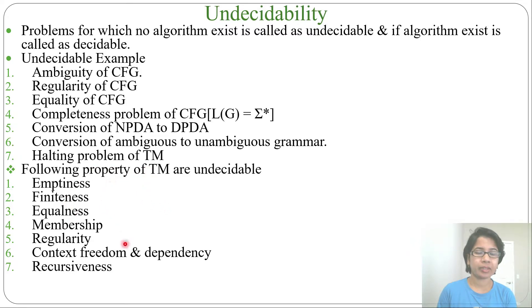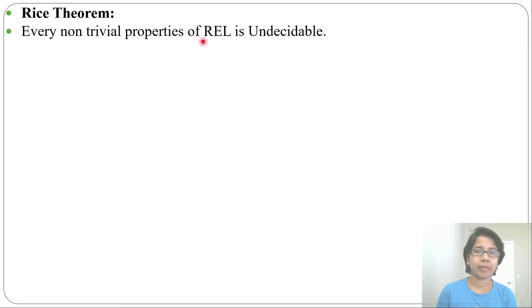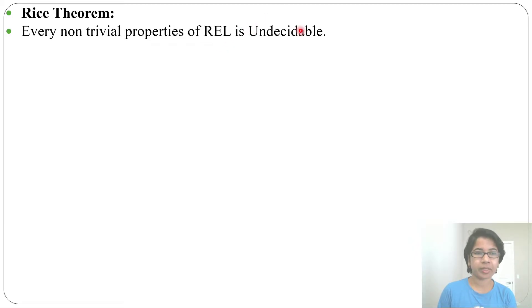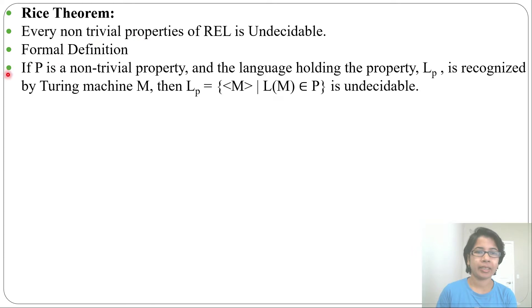That's why these are called non-trivial properties. Let's discuss Rice's theorem. In Rice's theorem, every non-trivial property of a recursively enumerable language is undecidable, or you can say every non-trivial property of a Turing machine is undecidable, since recursively enumerable languages are accepted by Turing machines.